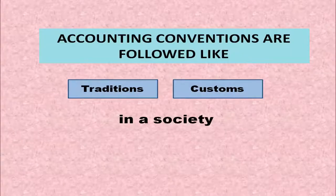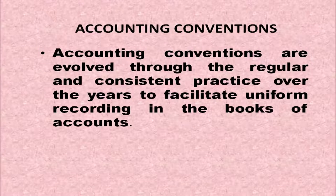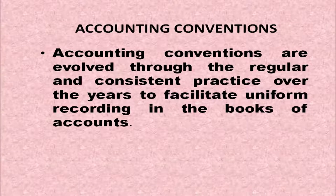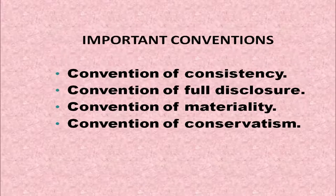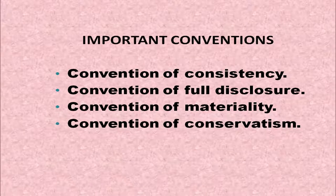Accounting Conventions are followed like traditions or customs in a society. They are evolved through regular practice over many years, as well as consistent practice — that is, continuous use of the same method over many years — to facilitate uniform recording in the books of accounts. The important conventions are: Convention of Consistency, Convention of Full Disclosure, Convention of Materiality, and Convention of Conservatism.